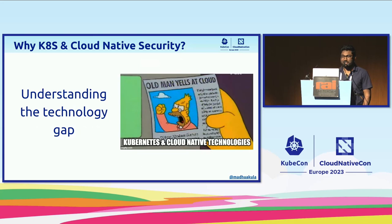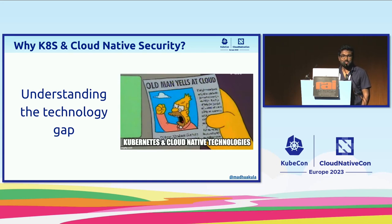The second thing is the technology gap. There is a ton of things coming out — if you look at the CNCF landscape, it's huge and growing. The landscape is quite heavy and people can't catch up. That's one of the biggest reasons it's very hard to build security layers on the Kubernetes or cloud native ecosystem.